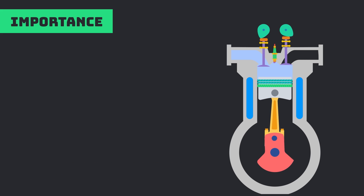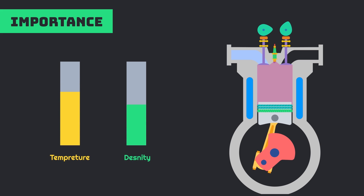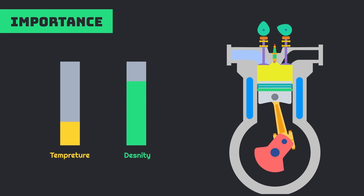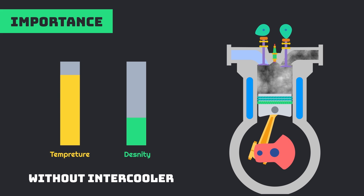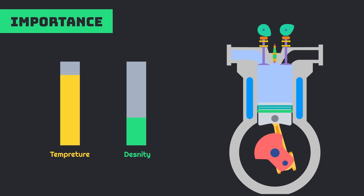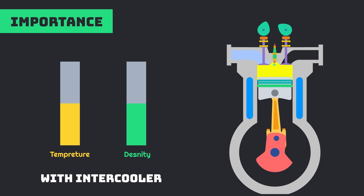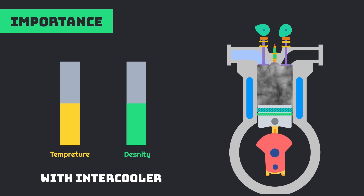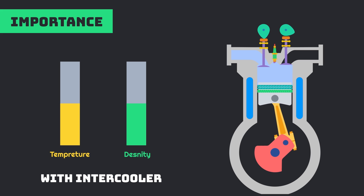On the other side, the density of air is inversely proportional to the air temperature, which means the density of air inside the combustion chamber decreases drastically, which reduces the engine performance and efficiency. Intercooler reduces the temperature of intake air, which results in denser air intake, which increases the volumetric efficiency of the engine, allowing it to burn fuel more efficiently and effectively.